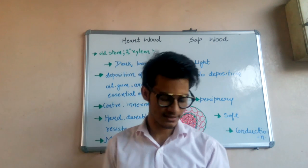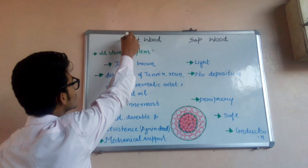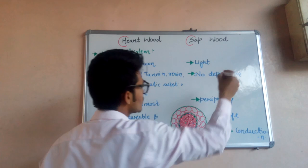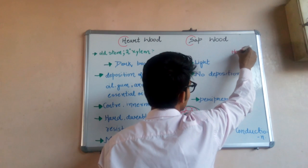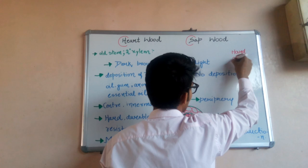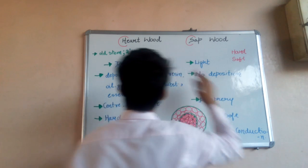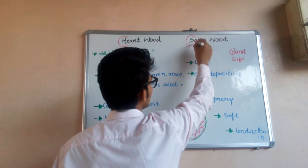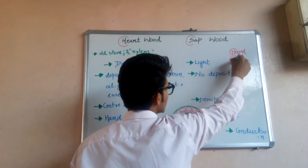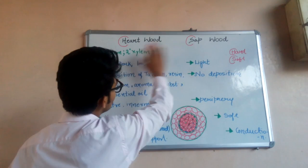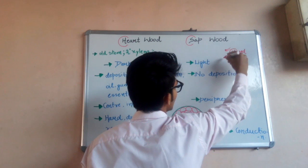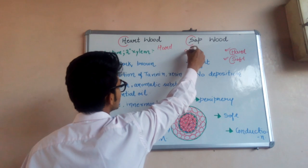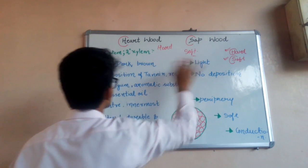What's the trick? Hardwood starts with H and sapwood starts with S. There are two words: hard and soft. Hardwood, starting from H, would be hard, and sapwood, starting from S, would be soft. All the characters of these two words can easily be memorized by these two keywords — hard and soft.